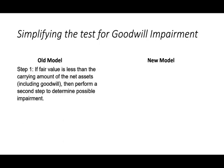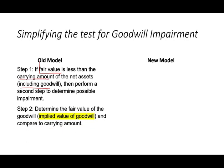The second topic is good news: simplifying the test for goodwill impairment. Under the old model, there was a two-step process. The first step: look at the fair value, see if it's less than the carrying value, then perform the second step if there is any impairment. In the second step, we determine the implied fair value of the goodwill, then compare that to the carrying amount.